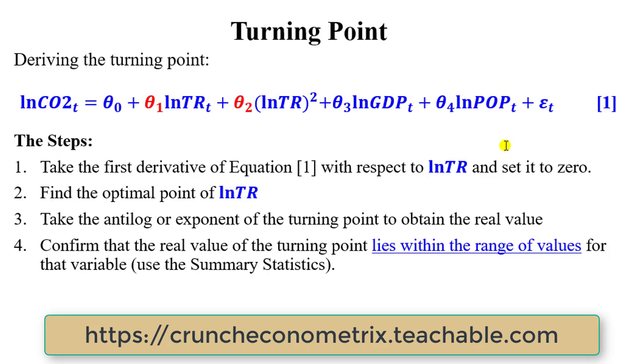These are the steps that you need to take if you want to determine the turning points for your quadratic model. First, take the first derivative of equation one with respect to the variable of interest. In this case we are looking at the log of trade, and set that first differential to zero. After which you find the optimal points of the variable. Since we are using a log, you need to take the anti-log or the exponent of the value that you obtain so that you can convert it to get the real value. After that, you confirm that real value of the turning point to ensure that it lies within the range of values for the variable of interest, and you can only get that when you do the summary statistics.